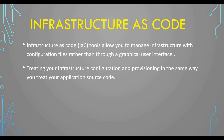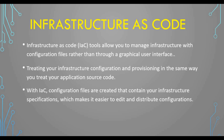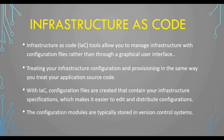The concept of infrastructure as code is treating your infrastructure configuration and provisioning in the same way you treat your application source code. The configuration files contain your infrastructure specification, which makes it easier to edit and distribute. If you want to create a server on AWS or Azure, you create a configuration file, specify your requirements, and keep it in a source code repository. These modules are typically stored in a version control system.